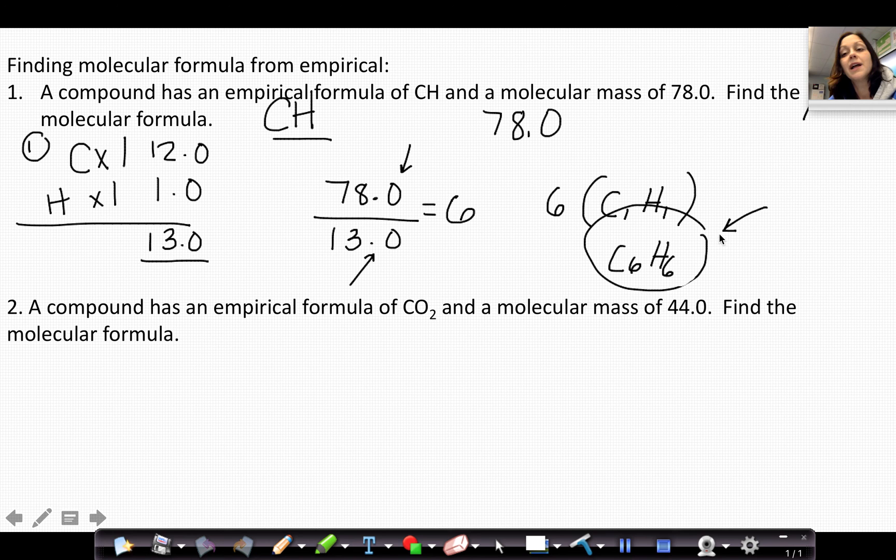So C6H6 would be the molecular formula, and when we do the gram formula mass of C6H6, it will have a mass of 78, so that matches. For a compound that has an empirical formula of CO2 and a molecular mass of 44.0...